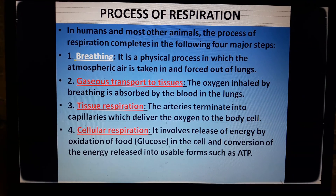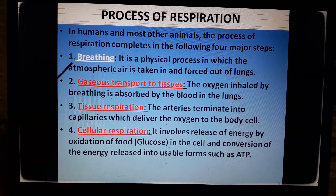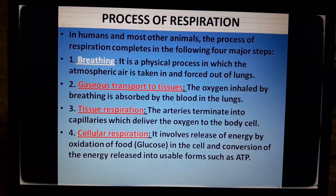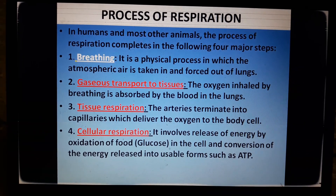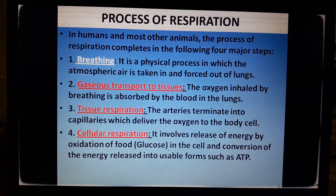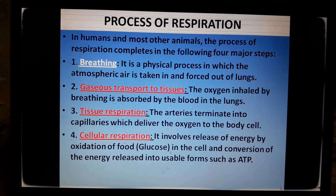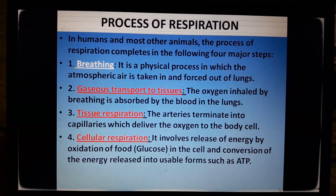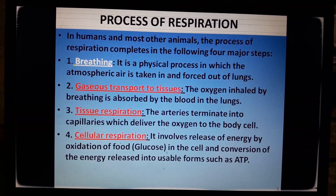In humans and most other animals, the process of respiration completes in four major steps. First is breathing, a physical process in which atmospheric air is taken in and forced out of the lungs. Second is gaseous transport to tissues, where oxygen inhaled by breathing is absorbed by the blood in the lungs. Third is tissue respiration, where arteries terminate into capillaries which deliver oxygen to body cells. Fourth, and most important, is cellular respiration, which involves release of energy by oxidation of food in the cell and its conversion into usable forms such as ATP.